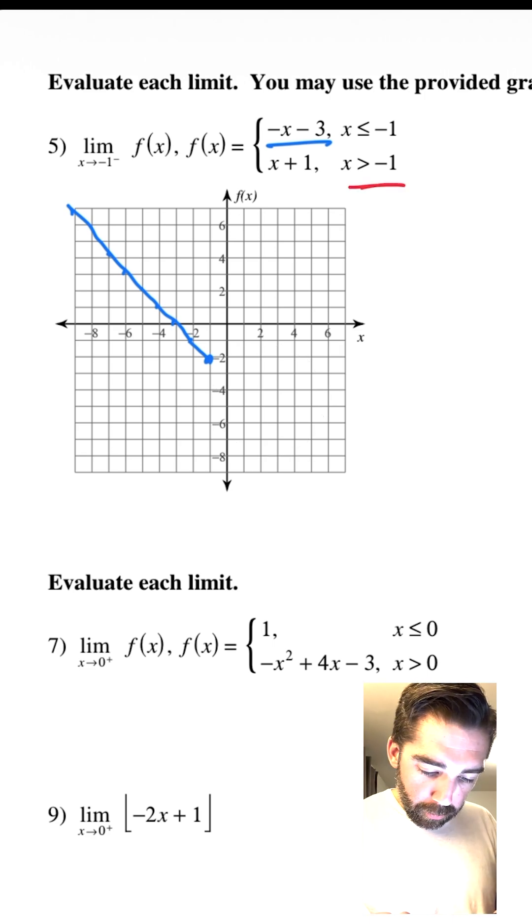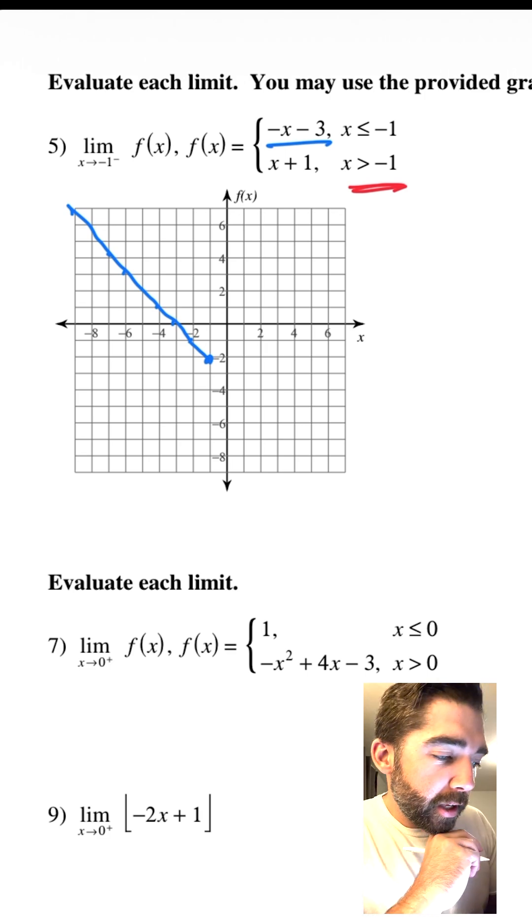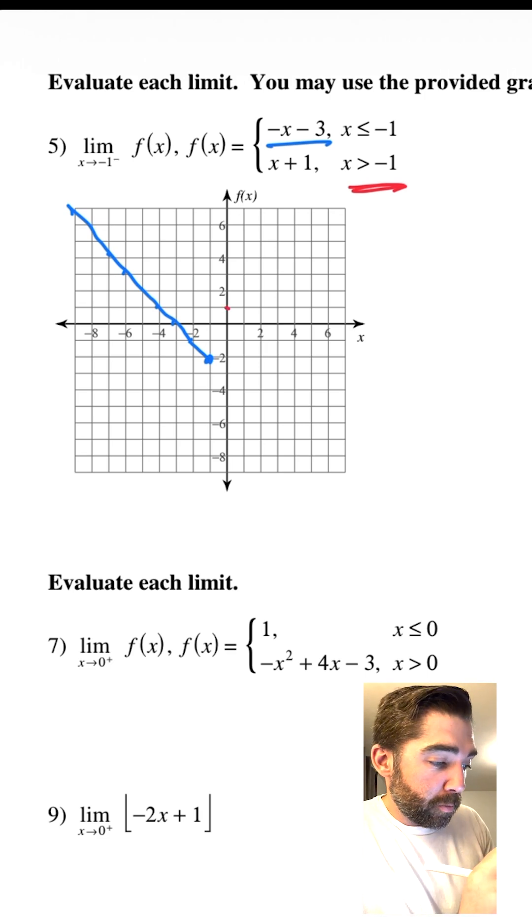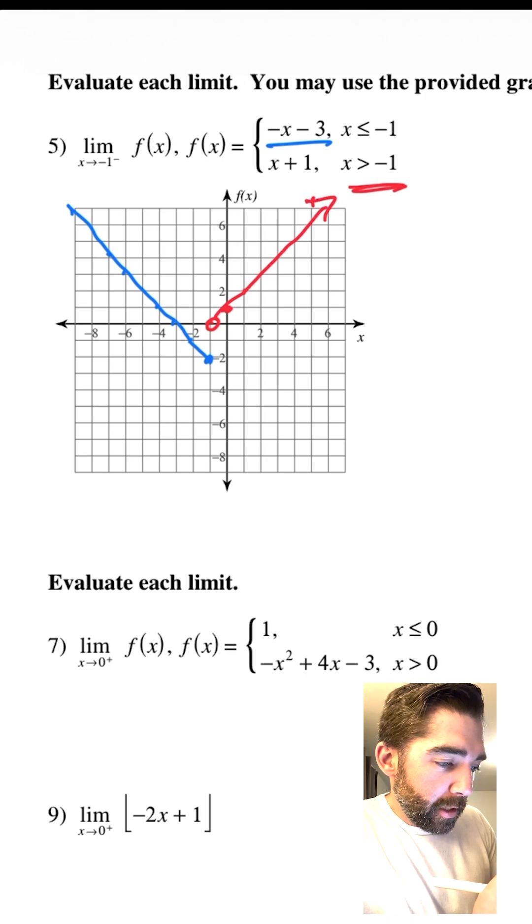and then our other one we'll do in red. When x is greater than negative 1, we have x plus 1. So we start on the plus 1. Remember, it's going to be down 1 over 1. This is an open circle, and so we're going like this. That's what our graph looks like.